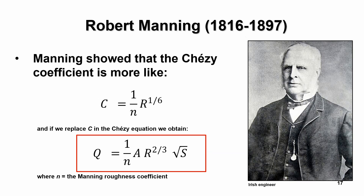Another person refined the Chézy coefficient — Robert Manning showed the Chézy coefficient is also a function of the hydraulic radius and introduced another way of expressing the roughness coefficient using the value n. Replacing C in the Chézy equation gives the Manning's equation: discharge equals (1/n) multiplied by the area, times the hydraulic radius to the two-thirds power, times the square root of the slope. This is the famous Manning's equation used in all open channel hydraulic calculations.